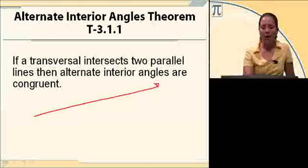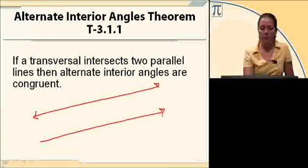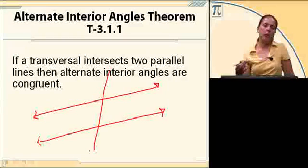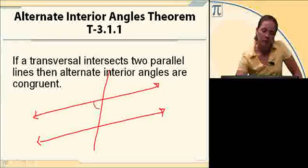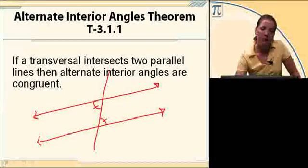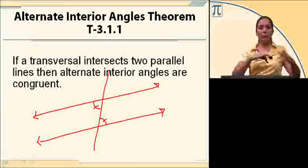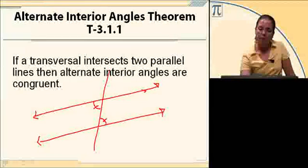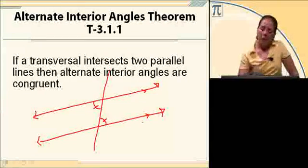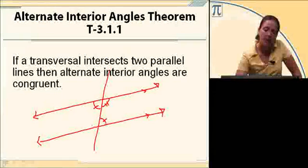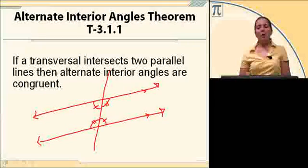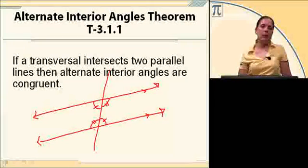One more: parallel lines cut by a transversal. Alternate interior angles are congruent. They're on alternate sides of the transversal and interior because they're inside those two parallel lines. Both sets of alternate interior angles are congruent when you have parallel lines cut by a transversal.